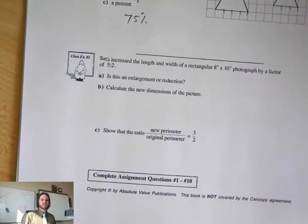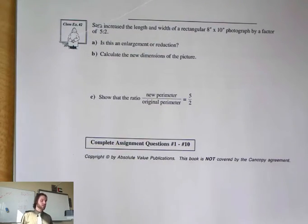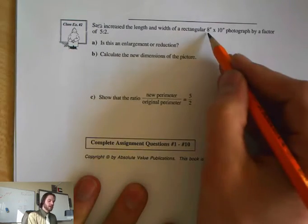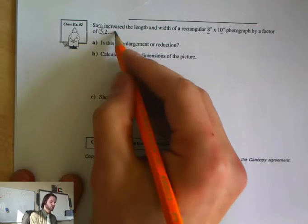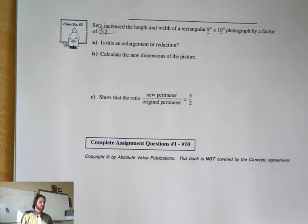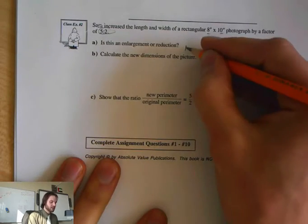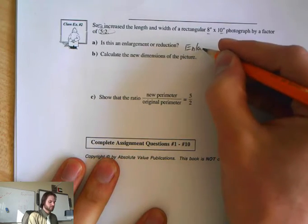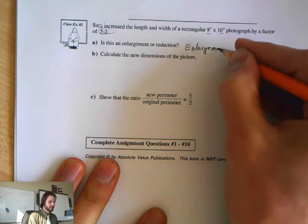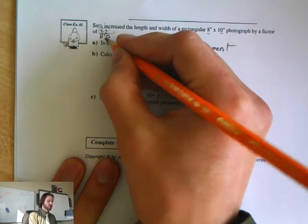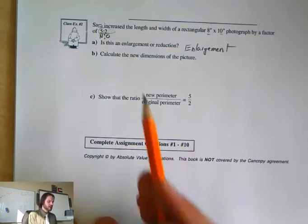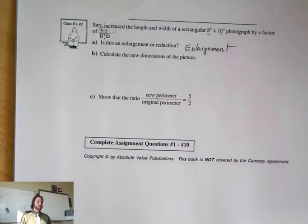Let's take a look at the next one here. It says Sarah increased the length and width of a rectangle 8 by 10 photograph by a factor of 5 to 2. So she increased it. The ratio is 5 to 2. Is this an enlargement or a reduction? This is an enlargement. Why? Because this is my new. This is my old. New to old.